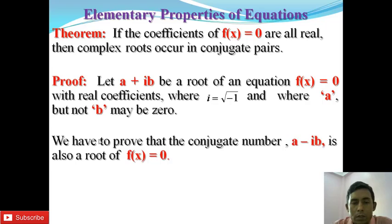We have to prove that the conjugate number a - ib is also a root of f(x) = 0. Because if a + ib is a root, then its conjugate is a - ib, obtained by substituting i with -i.